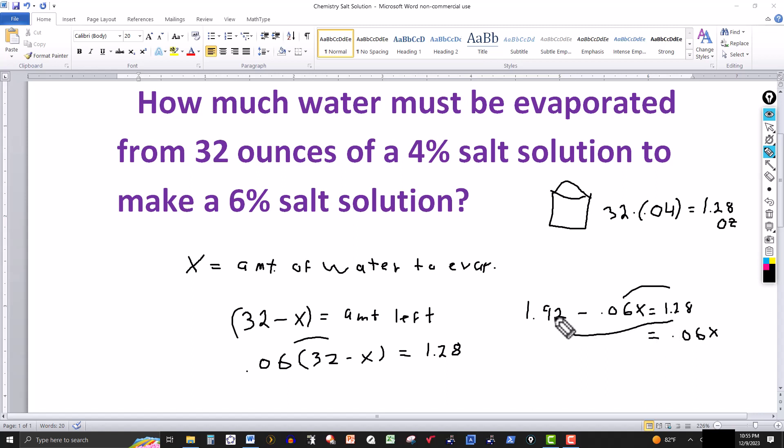The 1.92 subtract the 1.28 would give me 0.64. I want to solve for x, so divide both sides by 0.06. This cancels here, and 0.64 divided by 0.06.